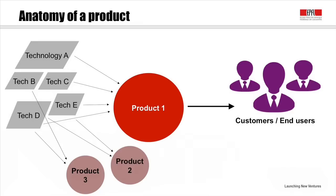Underlying a product are different sorts of technologies, but when you recombine these technologies — technology B, C, D, E, and A — you might be able to create another type of product which can cater to another set of end customers. This is the whole logic of technological fungibility that we discuss in management since the 1950s, which means one set of technologies can serve multiple markets.